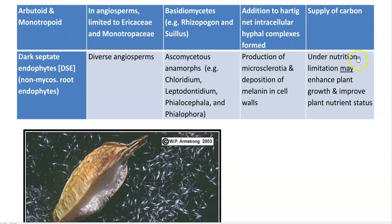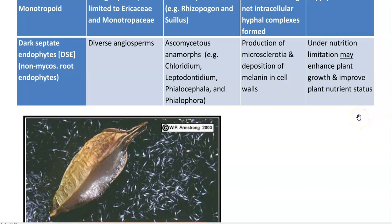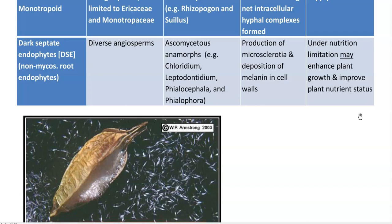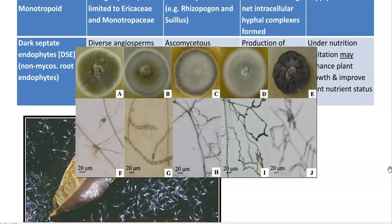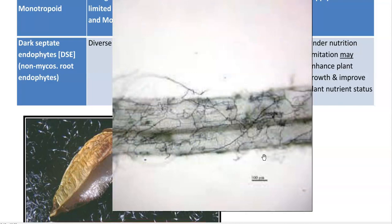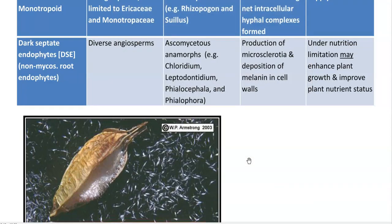The last category discussed here is dark septate endophytes. They are not mycorrhizas — they are non-mycorrhizal root endophytes found associated with diverse angiosperm plants. They belong to the fungal group Ascomycetes; genera include Chloridium, Phialocephala, and Phialophora. When this non-mycorrhizal group of fungi is associated with the plant system, microsclerotia can be noticed on the root surface and melanin deposition in fungal cell walls can be visualized under the microscope. These non-mycorrhizal fungi commonly occur in plants under nutrient-limited conditions and are assumed to improve nutrient status and plant growth under such conditions.